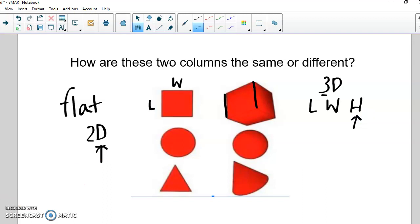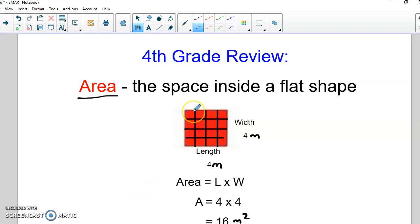So if we know how to find the inside of a 2D shape and we know that from fourth grade because we know that's called area and it's the space inside a flat shape. So if I were to look here at this square and it's 4 by 4, I could find the space inside by counting all of the squares inside or I could do length times width and it's 4 times 4 which would give me 16. And we know that the unit becomes squared. Sometimes I like to think of that as it becomes squared because it is a 2D shape.